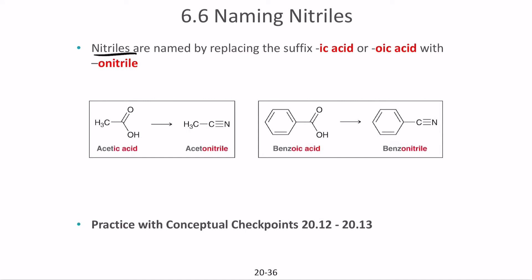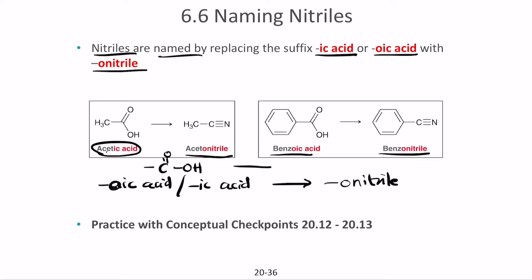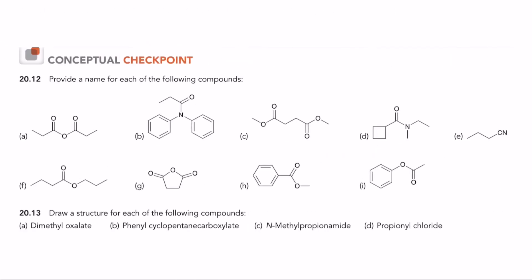Nitriles are named by replacing the suffix '-ic acid' or '-oic acid' with '-onitrile.' For example, acetic acid becomes acetonitrile and benzoic acid becomes benzonitrile. When converting COOH to C≡N, this naming convention applies. Use this principle to try and solve the naming problems.